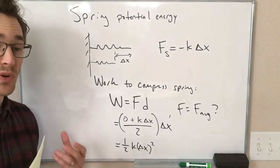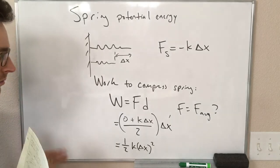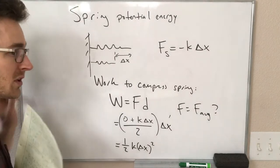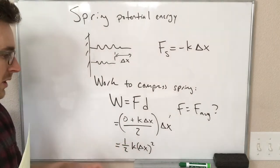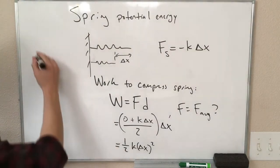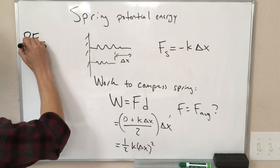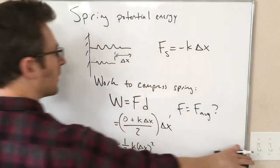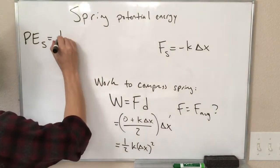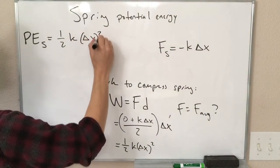And because springs are, spring forces are a conservative force, the work that we put into that is stored in the spring as potential energy. So this is also the expression for the potential energy stored in a spring. PE of the spring is equal to one half k delta x squared.